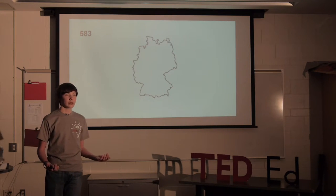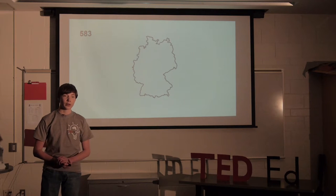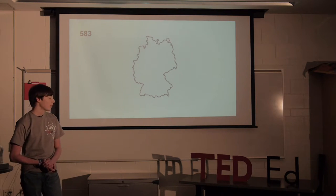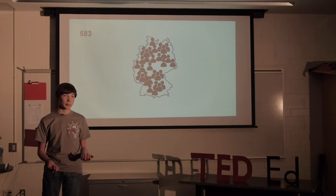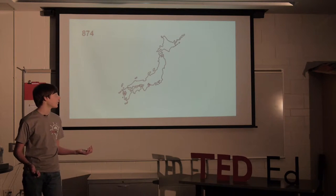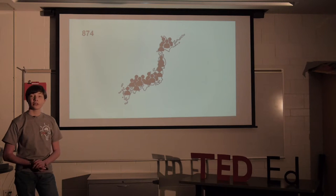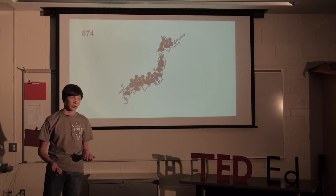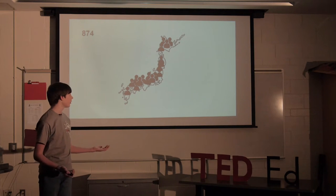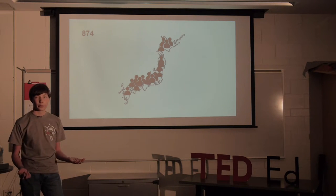But let's compare this to other first-world countries that have a high speed rail network already. Germany has a population density of around 583 people per square mile, and Japan is even larger with a population density per square mile of 874 people. Crazy, right? And these two countries have some of the best rail networks in the world.